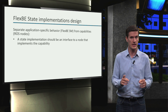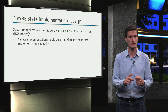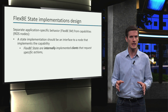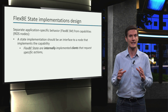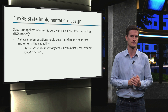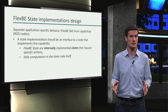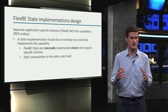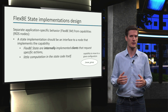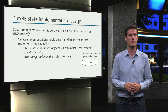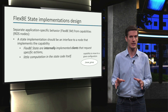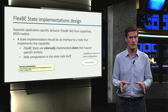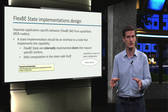It means that the state implementations should be interfaces to the nodes that implement the capabilities. That is, in practice, a FlexBE state is internally implemented as a client that requests the specific action. This means that the state implementations should in general be simple, including little computation. For example, let's come back to the robot motions in our pick behavior — the move_group node provides different interfaces for the capability to move a robot manipulator. So a state implementation would only need to consist of a client of that capability.